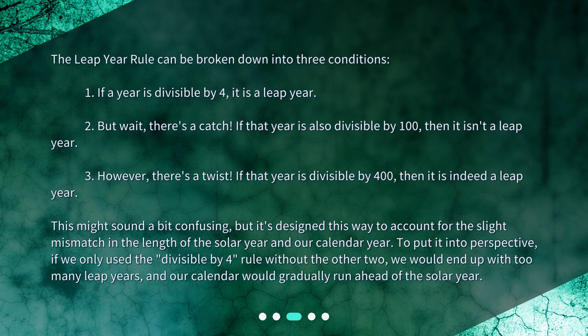But wait, there's a catch. If that year is also divisible by 100, then it isn't a leap year. However, there's a twist: if that year is divisible by 400, then it is indeed a leap year.